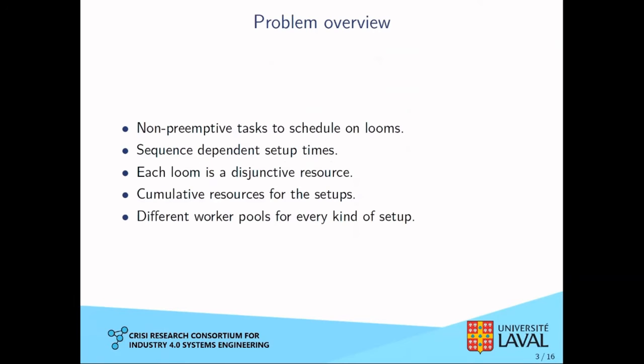Our problem is to schedule non-preemptive tasks on looms. The tasks are pieces of textiles to weave. There are sequence-dependent setup times to get a loom ready for its next task. Each loom is a disjunctive resource — a loom can only weave one piece of fabric at a time. There are cumulative resources, which are the different employees working on the setups, and the pool of workers is different for every setup type. The setup types are major and minor setups.